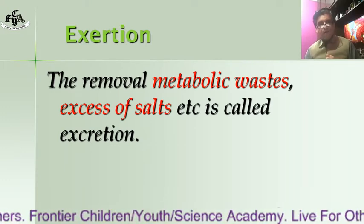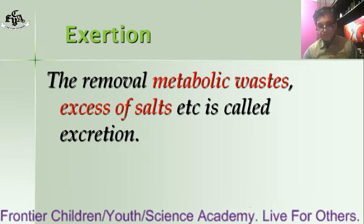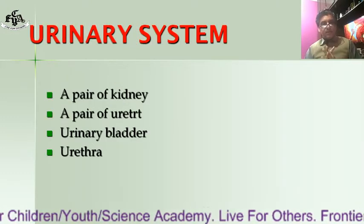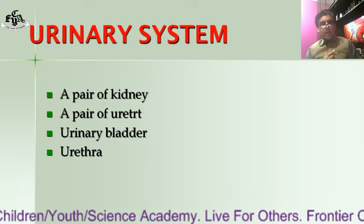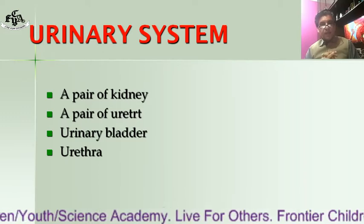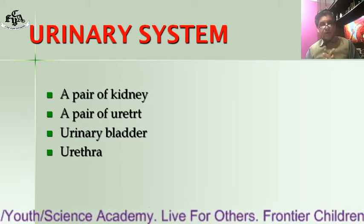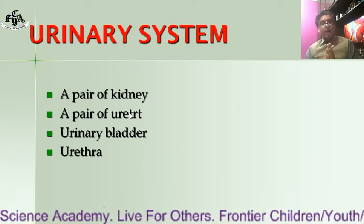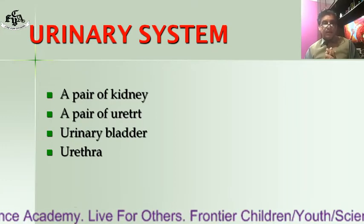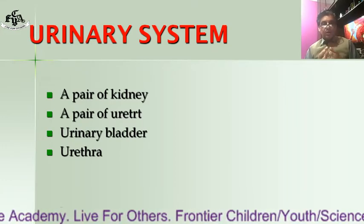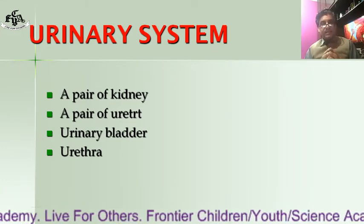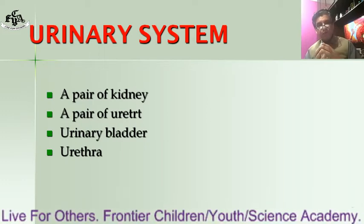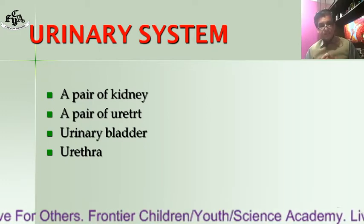The urinary system consists of these parts: a pair of kidneys, a pair of ureters, a urinary bladder, and a urethra. The kidney is the main organ of the urinary system, so first we will discuss the external structure of the kidney.